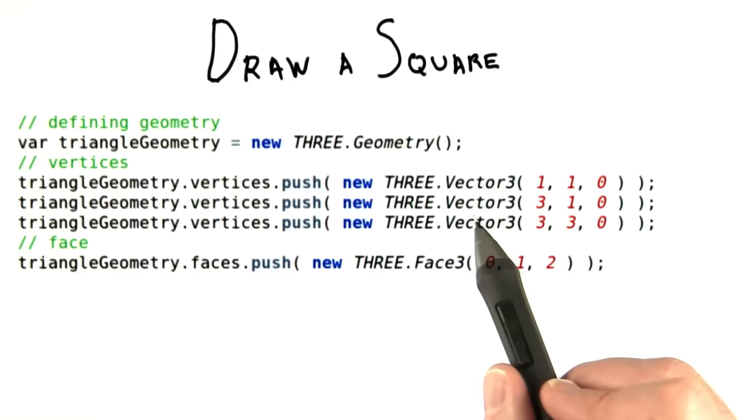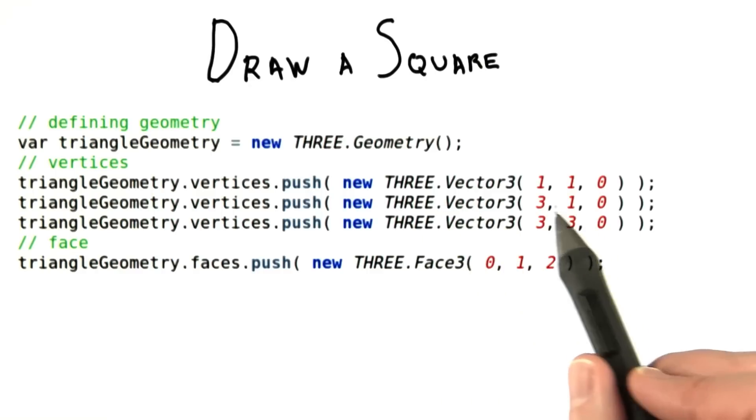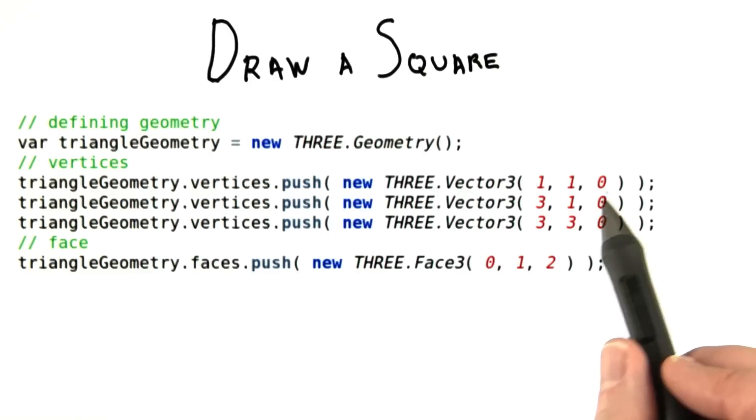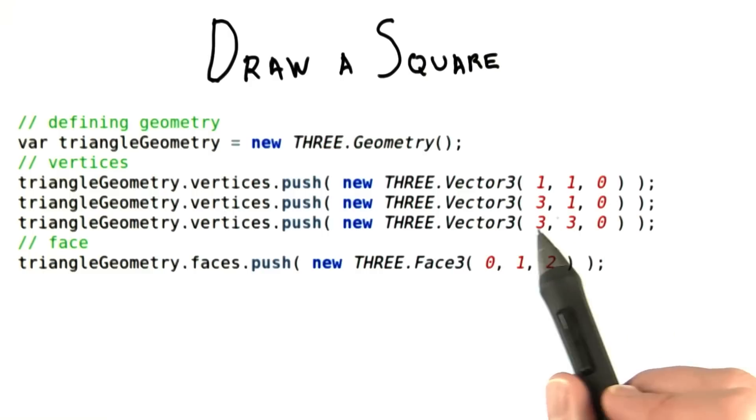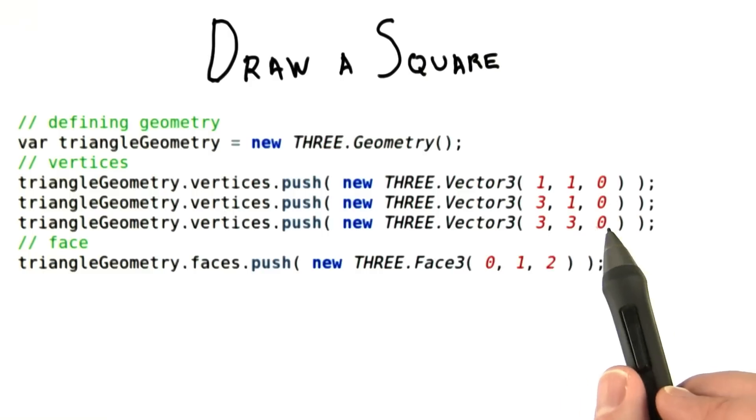We use Vector3 for both points and vectors within three.js, within this library. So these are floating point numbers, in fact, and define three points in x, y, and z coordinates.